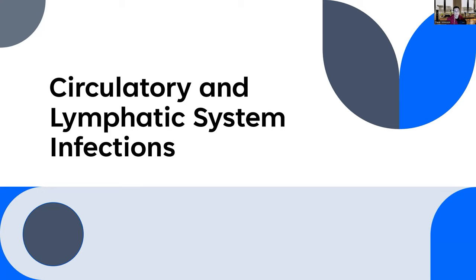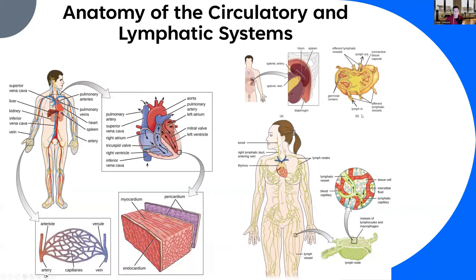We'll start with a quick reminder about the anatomy of these systems. The circulatory and lymphatic systems are made up of a series of vessels. With the cardiovascular system, you have arteries, veins, and capillaries that distribute nutrients, remove carbon dioxide, and bring oxygen to tissues. The lymphatic system has vessels that mirror the cardiovascular system, providing access to tissues for our immune cells and allowing fluid to recirculate back into the bloodstream.